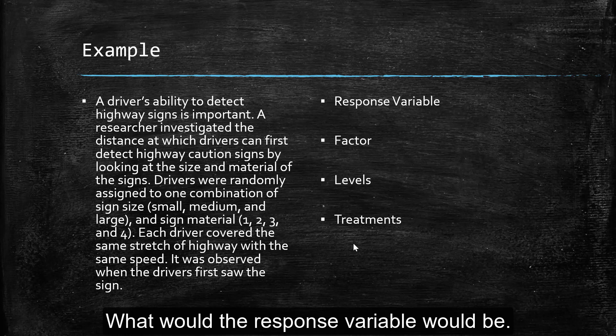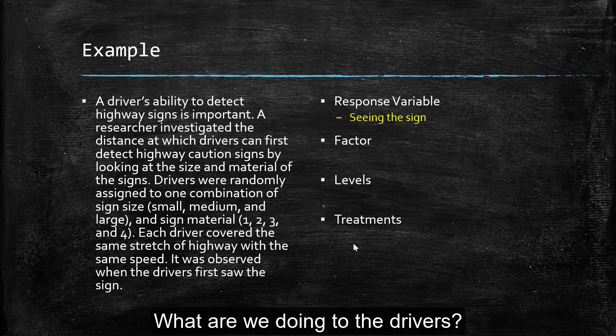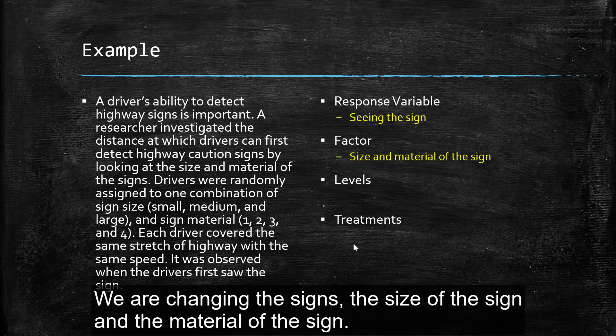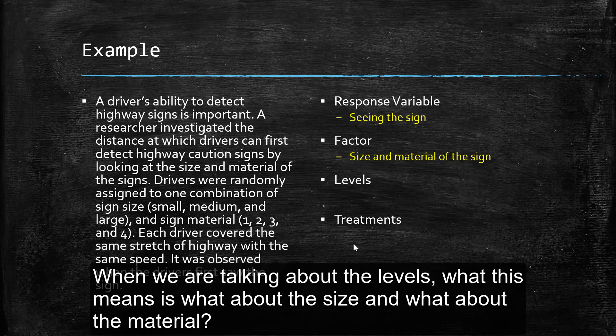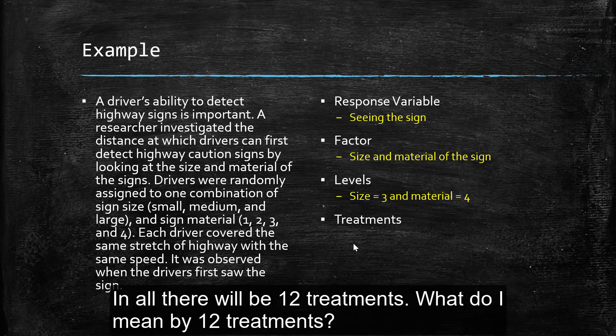Alright, so let's think about what the response variable would be. So at the end of the experiment, what are we trying to see? And we're trying to see if the drivers can see the sign when they first see the sign. So what are we doing to the subjects, the drivers? Well, we're changing the signs, right? And that's either the size of the sign or the material of the sign. So now when we're talking about the levels, what this means is, what about the size and what about the material? So for the size, there are three sizes we're looking at: small, medium, and large. And for the material, there are four different types of material. And all it said was one, two, three, and four.